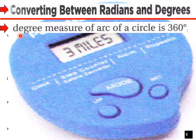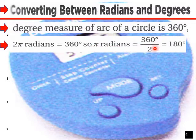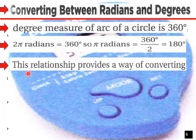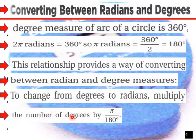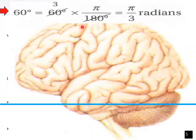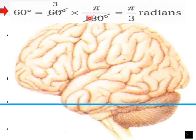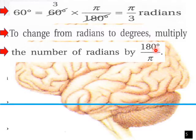Converting between radians and degrees: the degree measure of a full arc of a circle is 360 degrees. 2π radians equals 360 degrees, so π radians equals 180 degrees. This relationship provides a way of converting between radian and degree measures. To change from degrees to radians, multiply the number of degrees by π over 180. For example, 60 degrees times π over 180 equals π over 3 radians. To change from radians to degrees, multiply the number of radians by 180 over π.